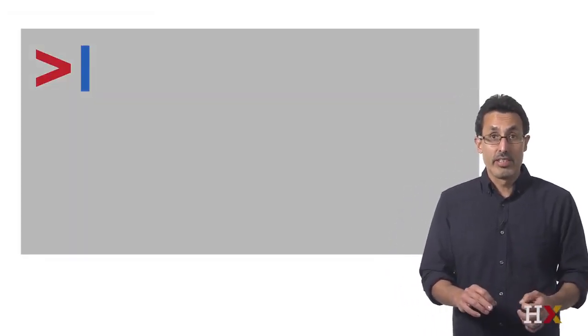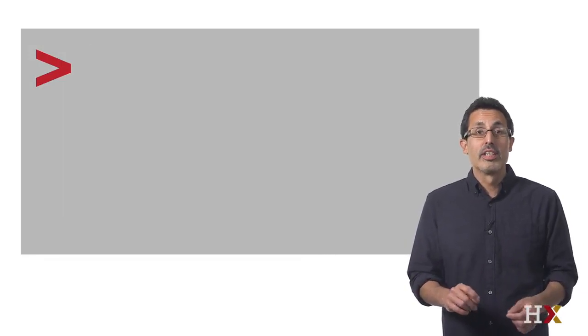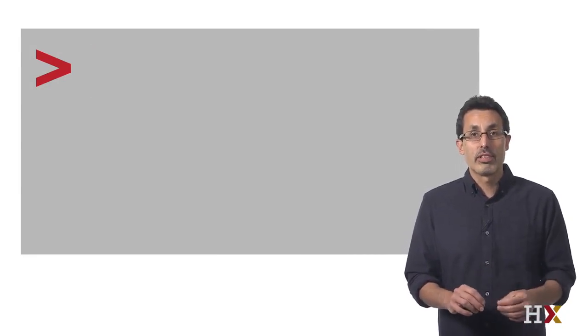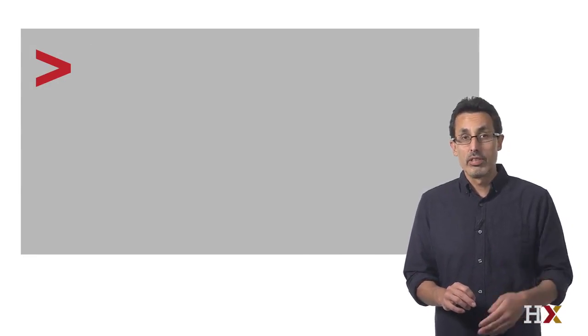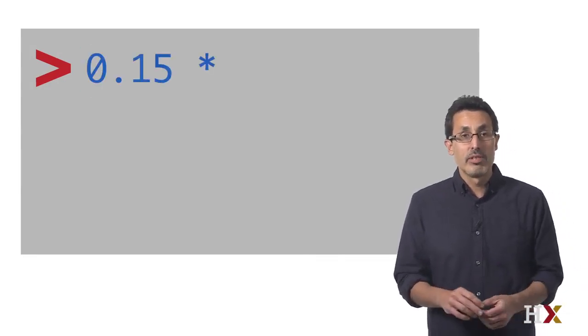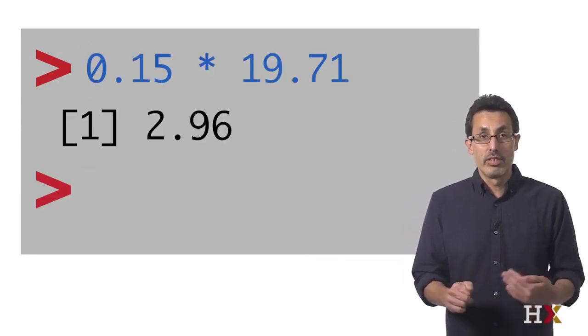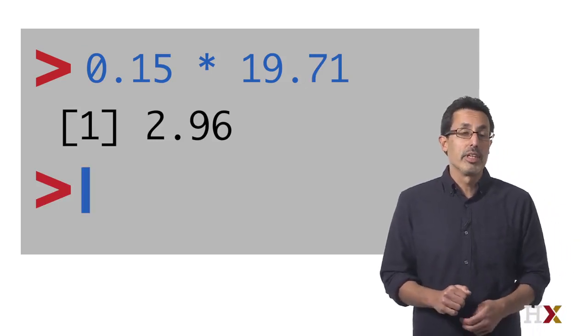When you type an expression into the console and hit Return, the expression is evaluated. As a very quick and simple example, try using the console to calculate a 15% tip on a meal that costs $19.71. Here's how you do it. You just write the numbers out, hit Return, and you get your answer. You should leave a tip of $2.96.